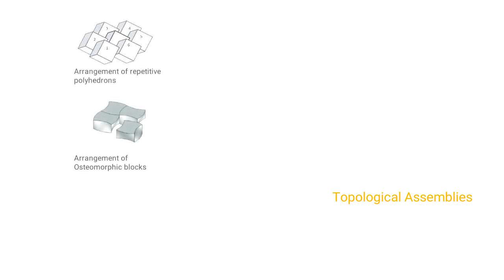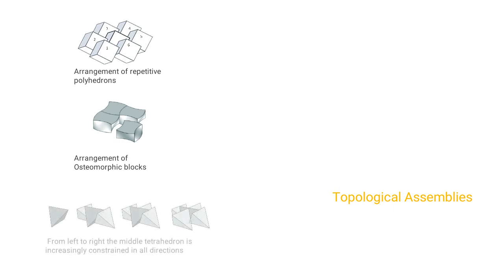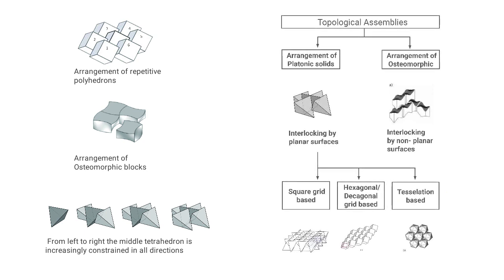Most present at this conference might be aware of topological assemblies; this is a quick run-through for those who don't. Topological assemblies are arrangements of kinematically constrained repetitive polyhedrons or osteomorphic blocks. As shown in this figure, from left to right, the middle tetrahedron is increasingly constrained in all directions. There are two types: arrangements of platonic solids, interlocked within planar surfaces, and osteomorphic blocks with non-planar interlocking faces.